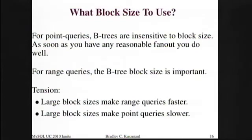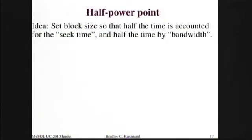When I'm designing data structures, the question I'm trying to get at is: how big should the block size be? If you use a really big block size for B-trees, you end up making range queries fast but point queries get slow. And if you use really small blocks, then point queries are fast but range queries are slow. The challenge is to find a good halfway point. The halfway point is when the seek time equals the transfer time for your block size — that guarantees you're always within a factor of two, no matter whether you're doing range queries or point queries or some mix.